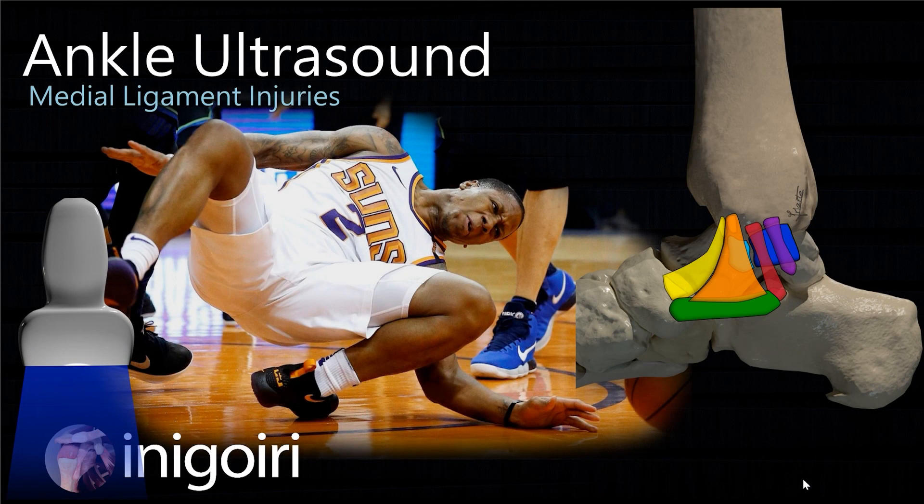That's all. We saw the lateral complex and now we have seen the medial complex: its anatomy, its ultrasound assessment, and injury assessment with ultrasound. The take-home message: don't forget to examine the medial ligaments when you have a patient with an ankle sprain who complains of medial pain. Even if the diagnosis is lateral ankle sprain, always take a look at the medial ligamentary complex — you will find more injuries than you previously thought. If you like the videos, check the like and don't forget to subscribe.